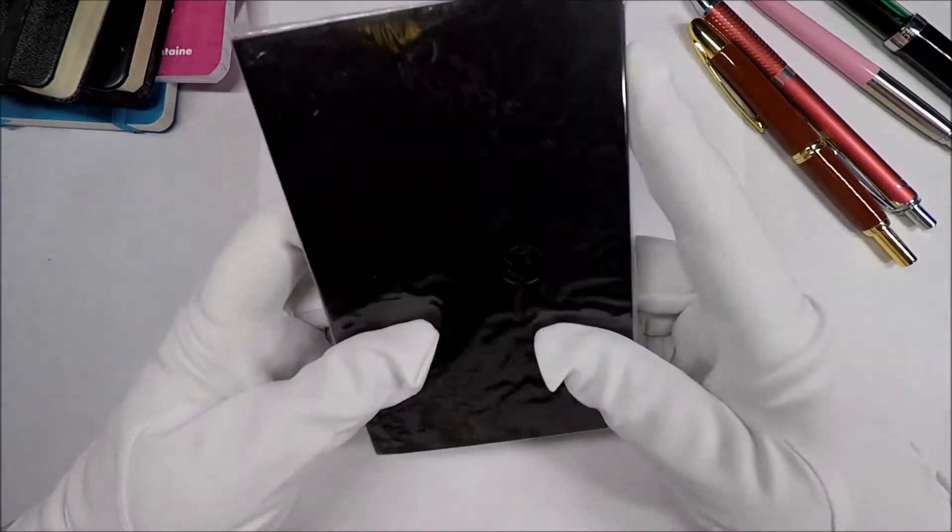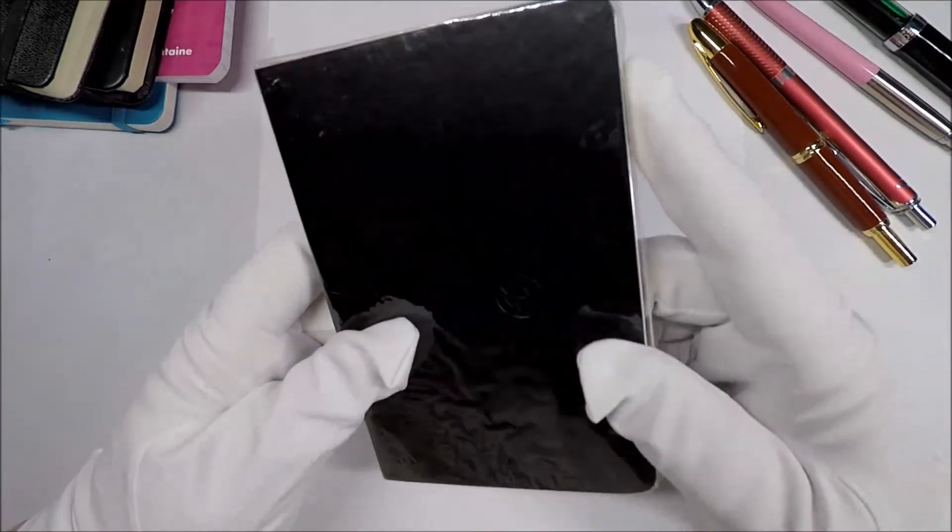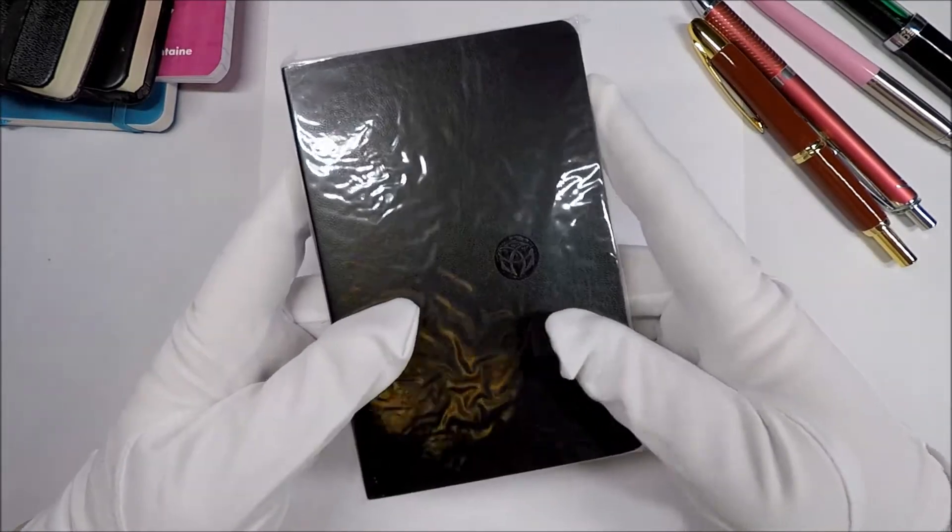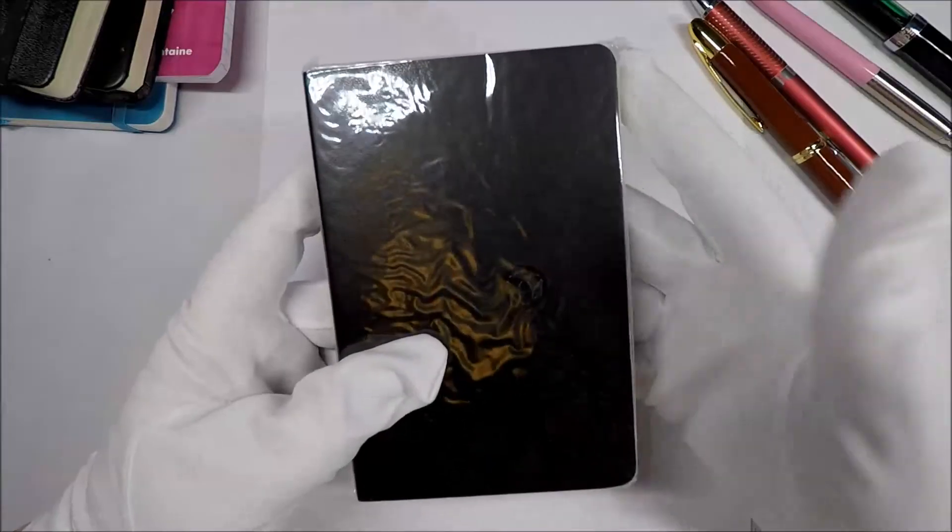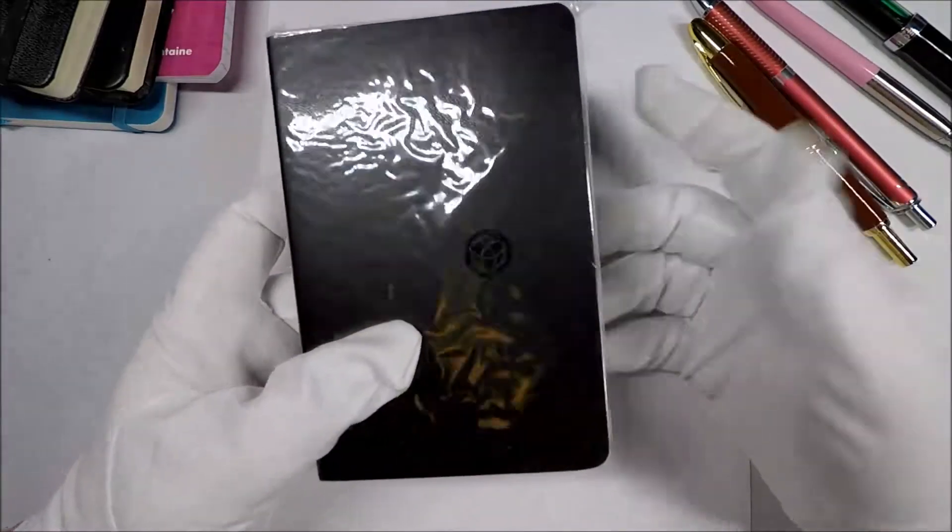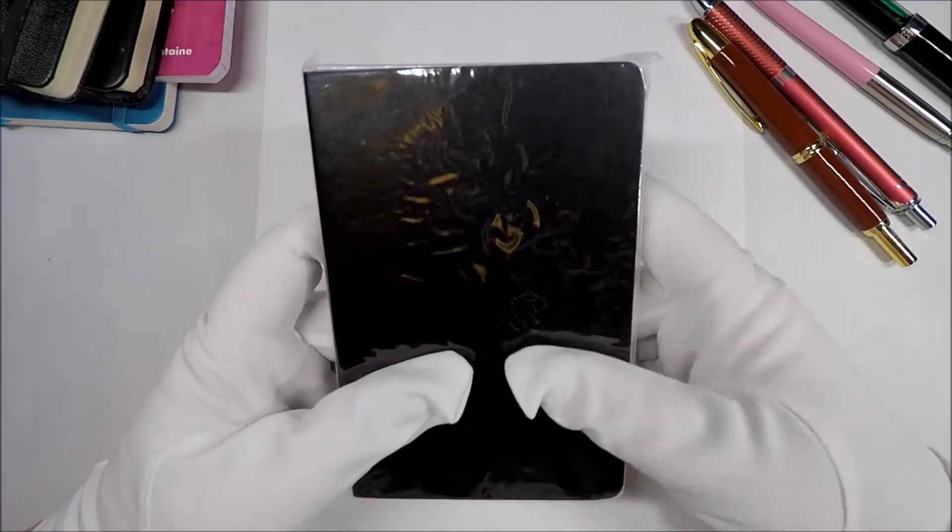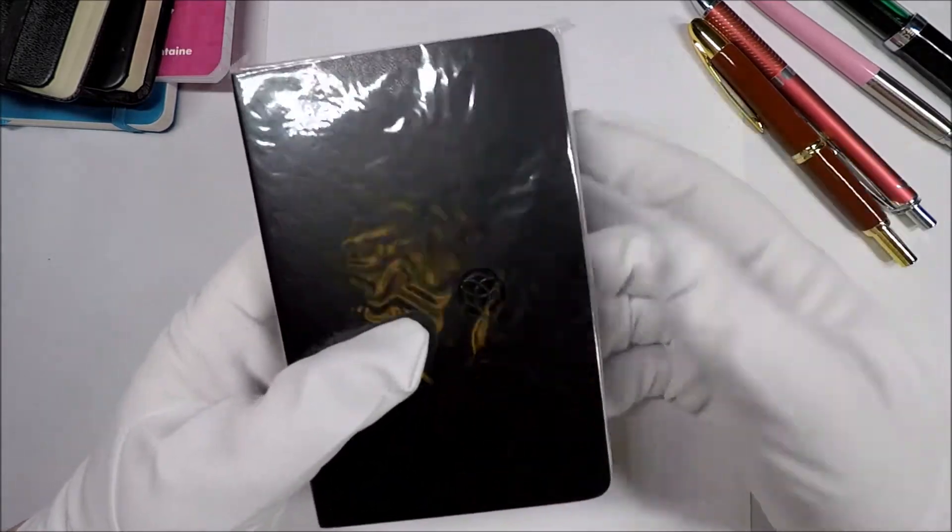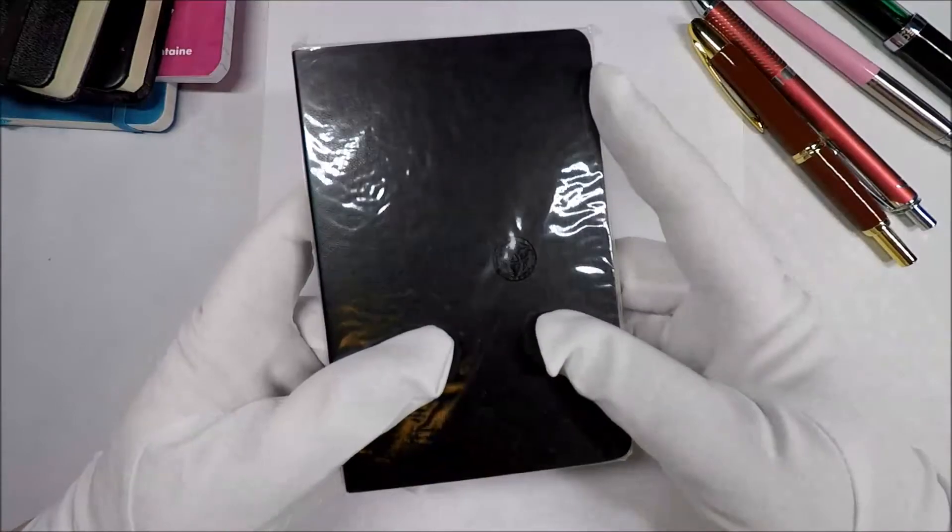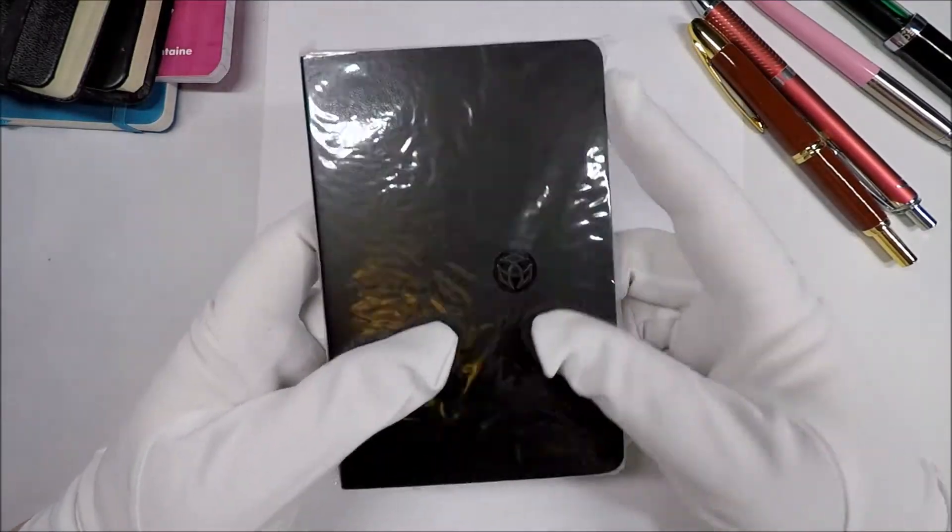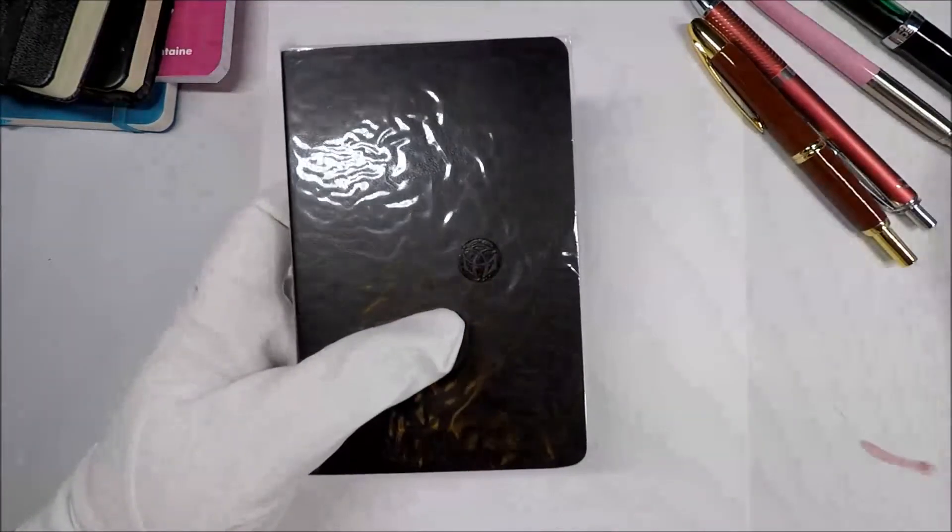Now, the deal with the Twisbi notebook is it's supposed to be specially designed for fountain pens. The paper's supposed to be good to write with fountain pens. And the notebook itself is comparable in price to like the Moleskine and those other kind of notebooks. It runs around, I want to say, $11 to $14, depending on where you get it. Now, first of all, before we open it up, let's take a look at the size.